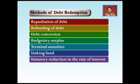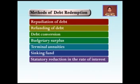The government adopts this method only during financial crisis. This method is quite similar to debt conversion because in both cases the government reduces the rate of interest. However, debt conversion is a voluntary method, whereas statutory reduction is compulsory — people are forced to accept the reduced rate, unlike in debt conversion.